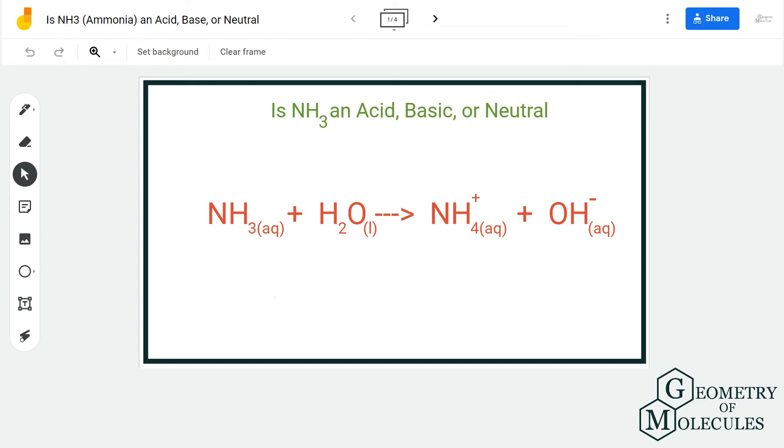Hi guys, welcome back to our channel. In today's video, we are going to help you find out if NH3 or ammonia is an acidic, basic, or neutral molecule. To find out, we are first going to look at the equation and then look at the couple of theories that are used in chemistry to determine if a molecule is an acid, base, or neutral.